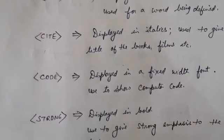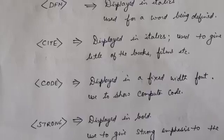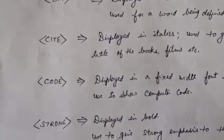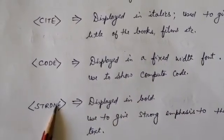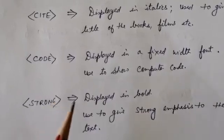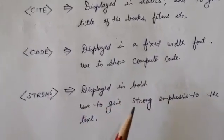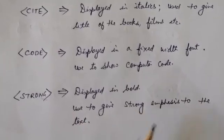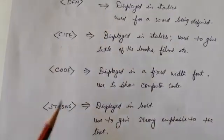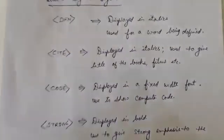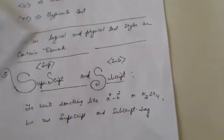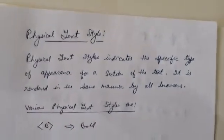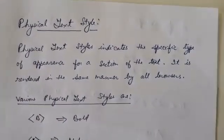The <code> tag makes code appear in your browser just like it would in an editor. The <strong> tag is used to make content bold and to give strong emphasis to the text. All these are logical text styles — as the name says, that is how it will appear in the browser.